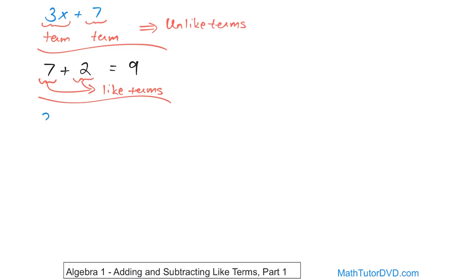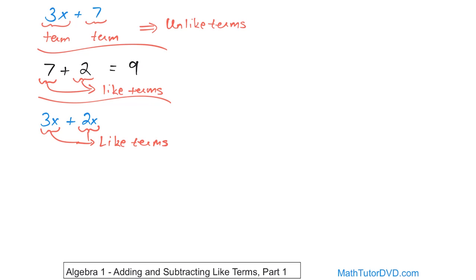Now let's look at something more like algebra. What about 3x plus 2x? Are these like terms or not? Well, this is a term and this is a term, and they are in fact like terms. What makes them like terms? It's not the numbers — the numbers can be totally different. It's because there's an x here and there's an x here. The variables have to completely match and the exponents have to match too. We'll talk more about exponents later. The basic idea is that in order to say they're like terms, the variables have to look exactly the same.